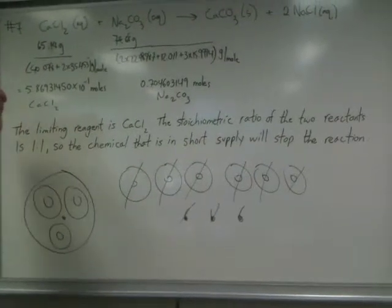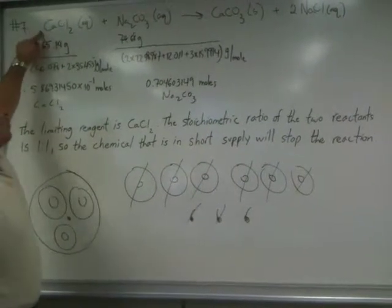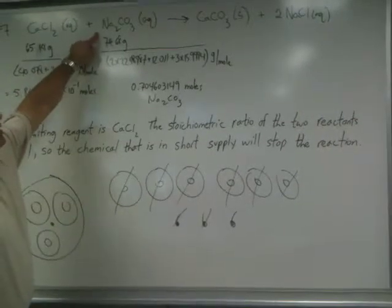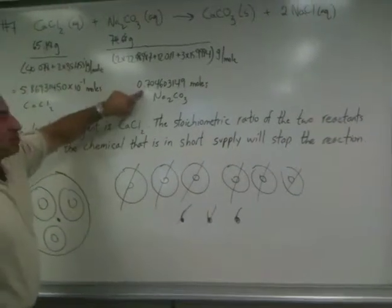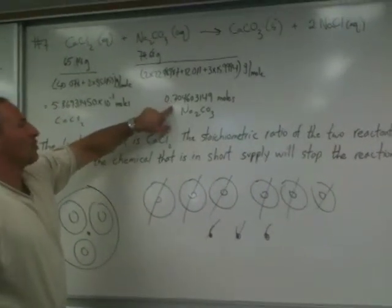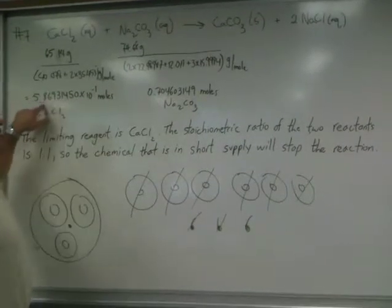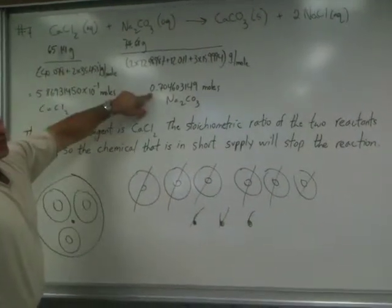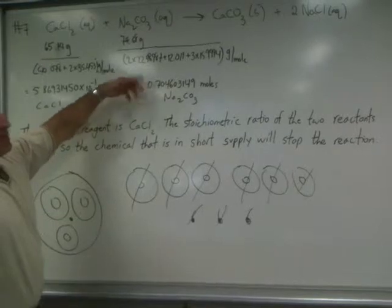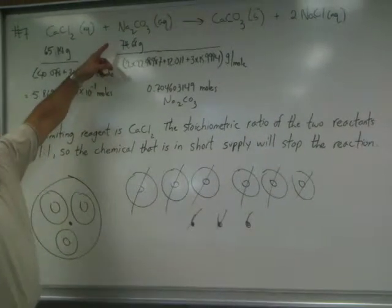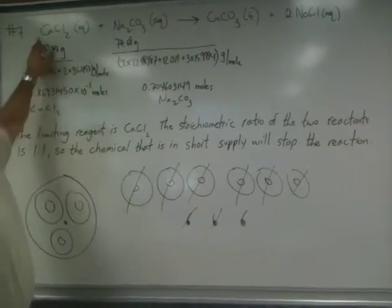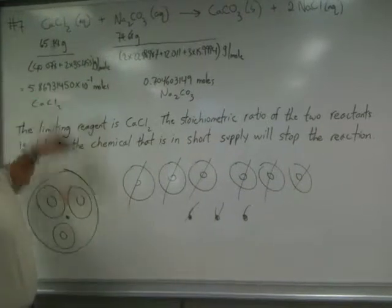If it should happen that the stoichiometric ratio was one to two, then this would be the chemical in short supply, even though there were more moles of it, because for every one mole of this, you'd use twice the moles of that. In that case, sodium carbonate would be the chemical in short supply. But because the stoichiometry is one to one, this one runs out first.